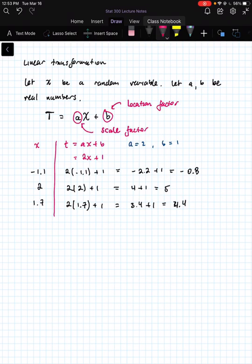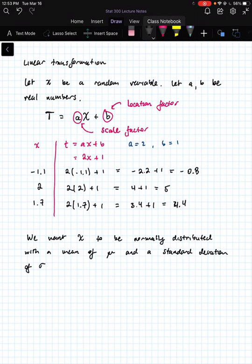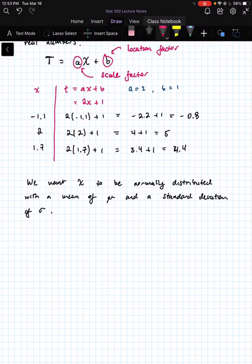So what's the punchline? Let's say that we're interested in a normal distribution that has a mean. So we want x to be normally distributed with a mean of mu. So its location is going to be centered around the mu and a standard deviation of sigma. So its scale, we want it to be spread according to sigma.